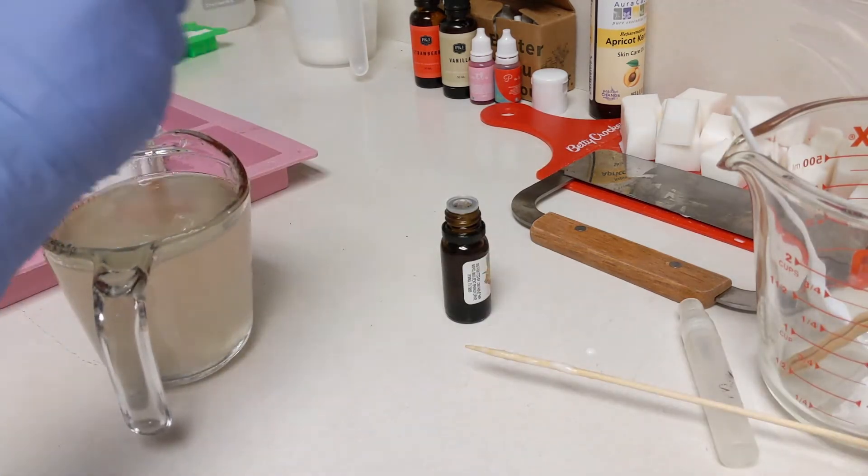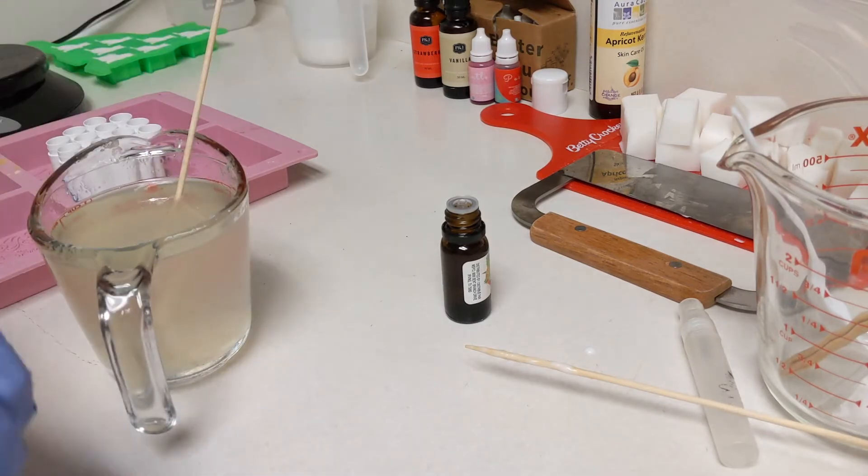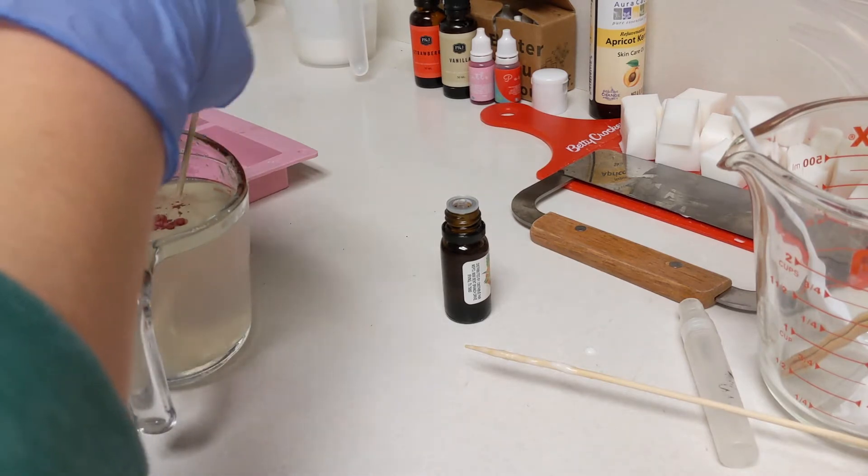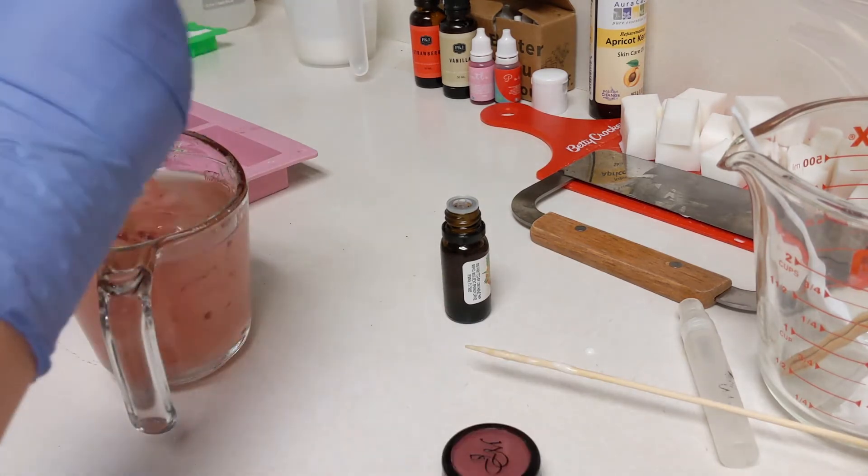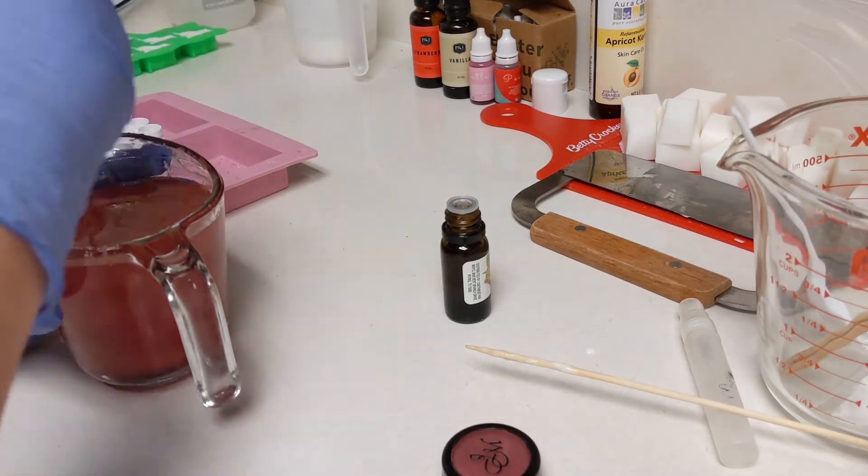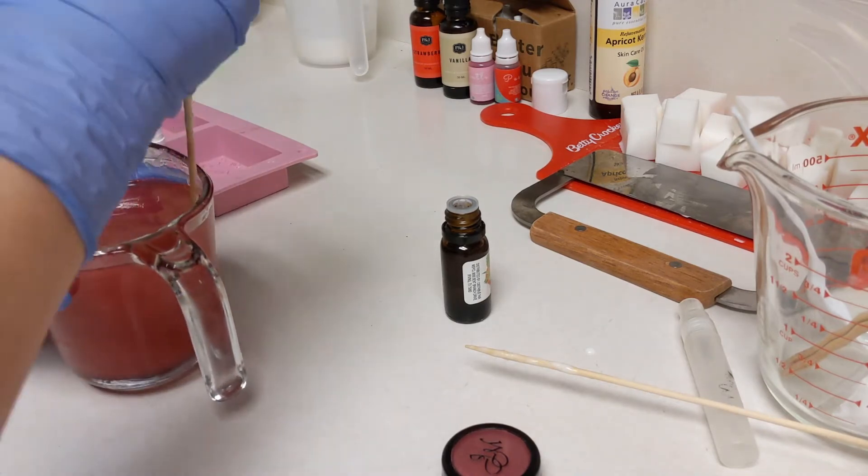Now I have some cosmetic grade mica. When I say cosmetic grade, I mean it's literally makeup that I got. It's a nice color that's just in between a pink and a red color. I thought it would make nice coloring for this strawberry lip balm.